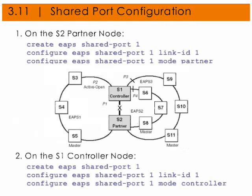Here are the commands for a shared port configuration. You must configure the partner node first and then the controller. Configuration rules regarding the common link: controller and partner EAPS shared port instances on either side of a common link must have the same link ID; each common link must have a unique EAPS shared port link ID; EAPS shared port modes on either side of a link must be different from each other — controller and partner — and they cannot be configured on the secondary port of an EAPS master. Configuration rules on the switch: up to two EAPS shared port instances are allowed per switch; no more than one EAPS shared port controller can be on a switch; and you can have up to four valid EAPS shared port configurations on a switch.